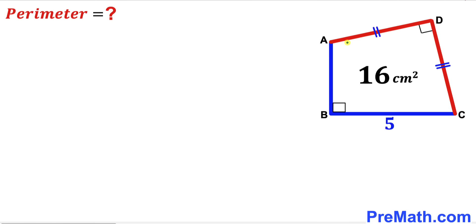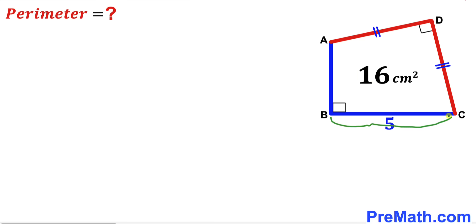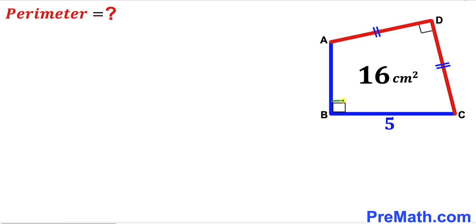Welcome to pre-math. In this video we have got this quadrilateral ABCD, as you can see in the given diagram, such that the area of this quadrilateral has been given to us as 16 centimeter square, its side length BC is 5 centimeter, side AD equals side CD, this angle is 90 degrees and likewise this angle is 90 degrees as well. Our task is to find the perimeter of this quadrilateral ABCD.